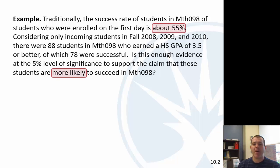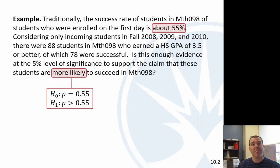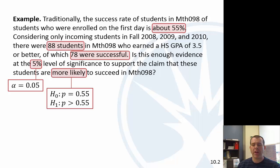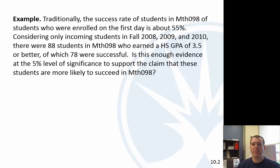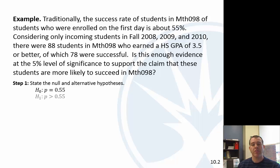Let's go back to our example about success rates. About 55% are usually successful and we're wondering if these students in this group are more likely to succeed. Our null hypothesis is that the proportion is 55% and our alternative is that it's more than that. We have a 5% level of significance, so alpha is 0.05. We have 88 students, 78 were successful, giving a sample proportion of 78 over 88.